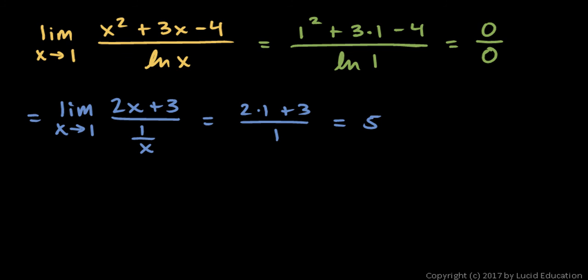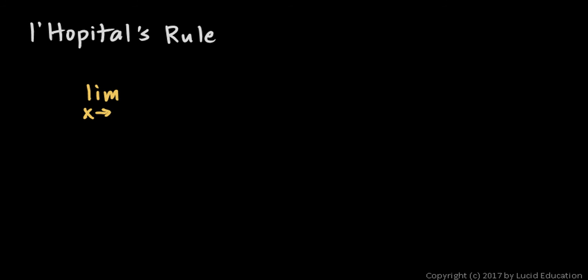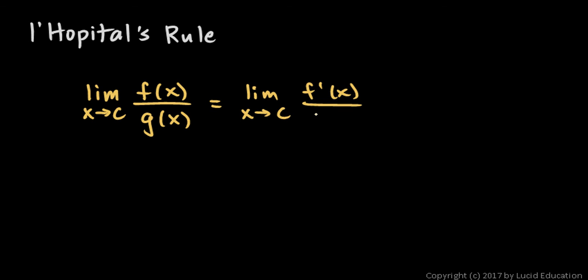That's L'Hôpital's rule. If you have a limit that evaluates to an indeterminate form, and that limit is a limit of one function over another, you can try taking the derivative of the numerator and the derivative of the denominator, and then take the limit again. The formal statement is: the limit as x approaches c of f(x) over g(x) is equal to the limit as x approaches c of f′(x) over g′(x). Now realize this is not true in general — it applies specifically when the original limit evaluates to an indeterminate form.